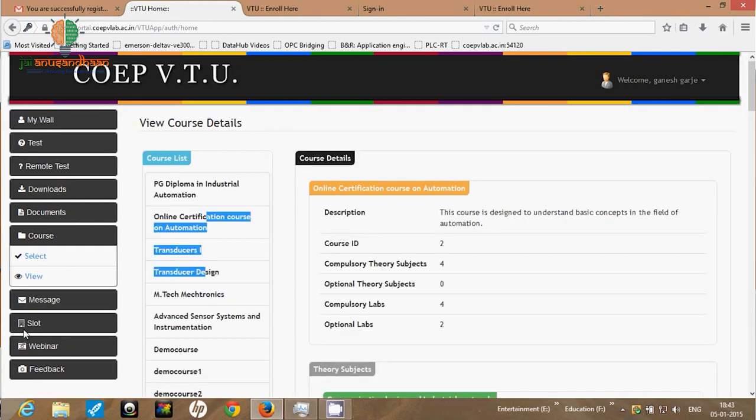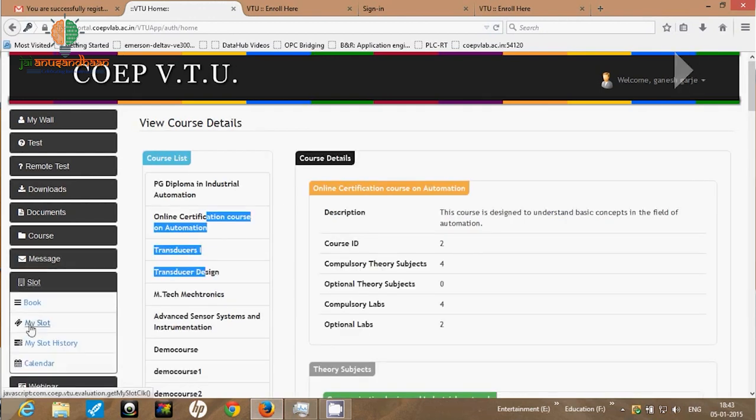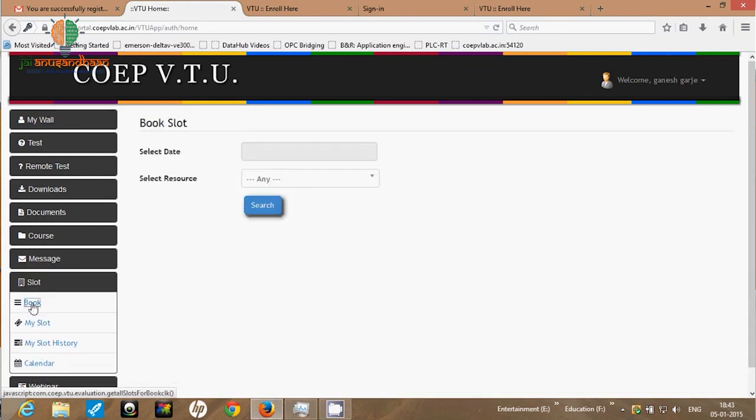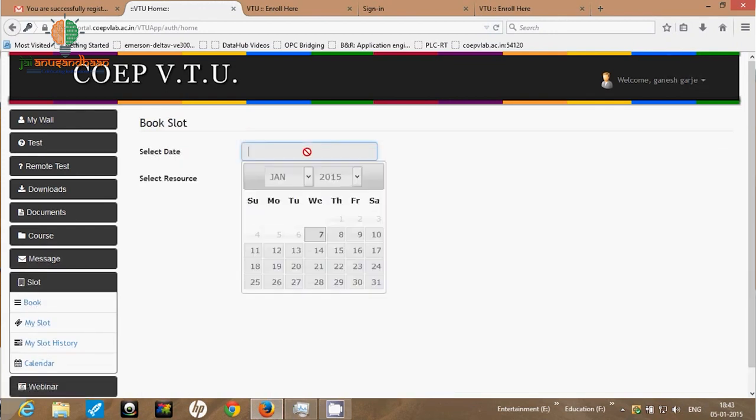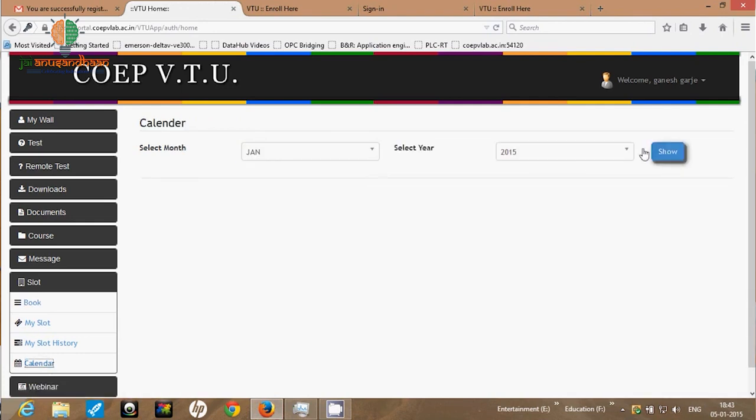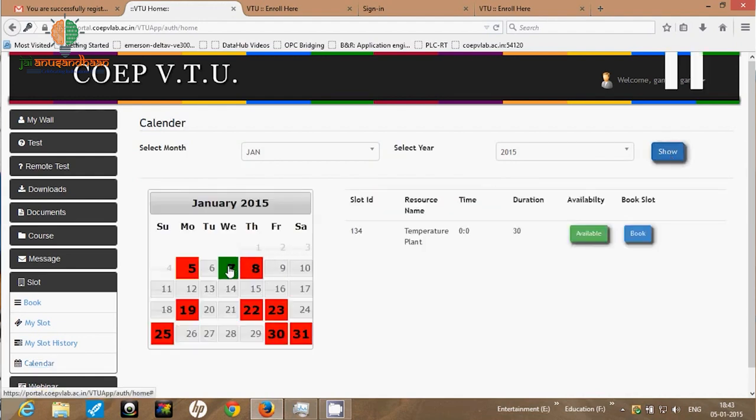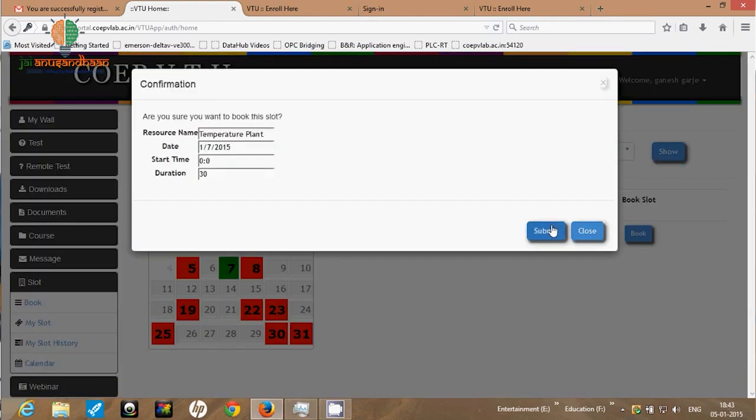After that, whatever plant you want to access, go to the slot. Then there is an option of book slot. You select the particular date. You have to request the slot four days prior so that the admin or technical people can ready the particular plant. Then select the date and select the resources from the list of plants.